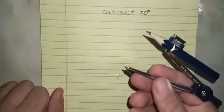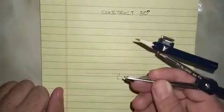Now, this would give us 60 degrees, but we don't want 60 degrees, we want 30. Without changing the compass radius, we are going to now bisect 60 degrees by drawing an arc here.